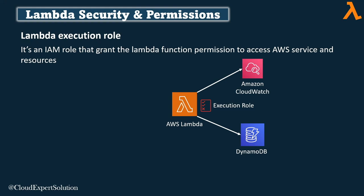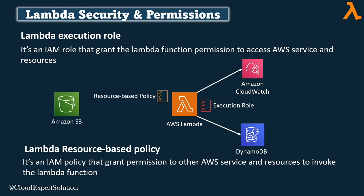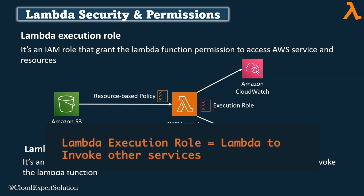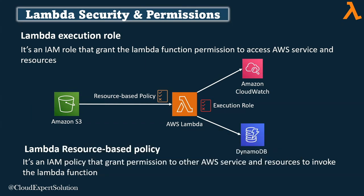How about when other AWS services want to access AWS Lambda? For that we have Lambda Resource-Based Policy — an IAM policy that grants other AWS services permission to invoke AWS Lambda. The resource-based policy should be attached to the Lambda function being invoked. For example, if you have an Amazon S3 bucket and want to invoke Lambda asynchronously on S3 object creation events, unless the Lambda resource-based policy explicitly grants permission to Amazon S3, S3 won't be able to invoke Lambda. To summarize: Lambda execution role gives permissions to the Lambda function to access other services, whereas resource-based policy gives other services permission to invoke AWS Lambda.